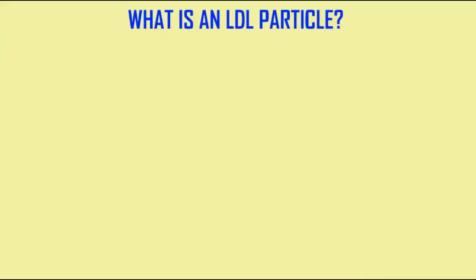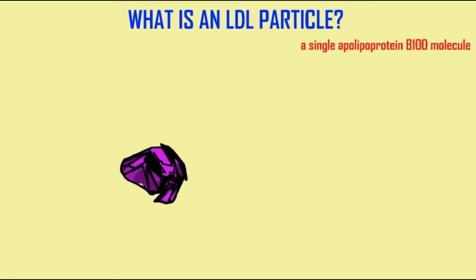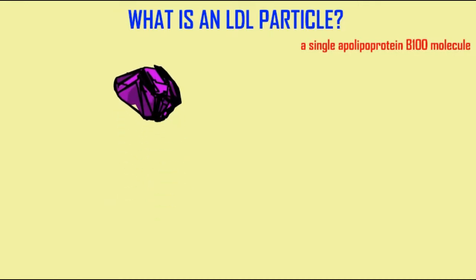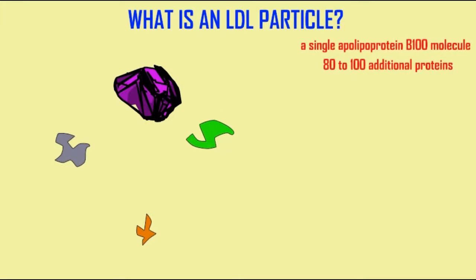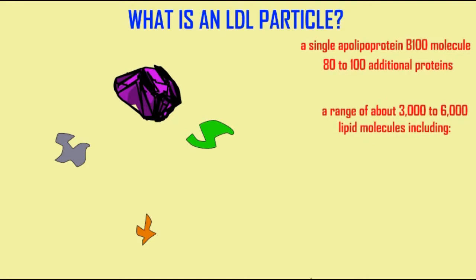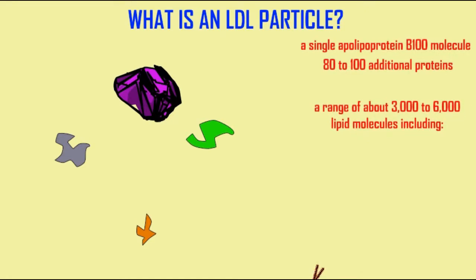What is an LDL particle, which is often referred to as 'bad cholesterol'? It is a lipoprotein — a low-density lipoprotein — in which there is a single molecule of apolipoprotein B100, which serves as a major protein in this particle. There are 80 to 100 additional proteins, which don't seem to be as consequential.